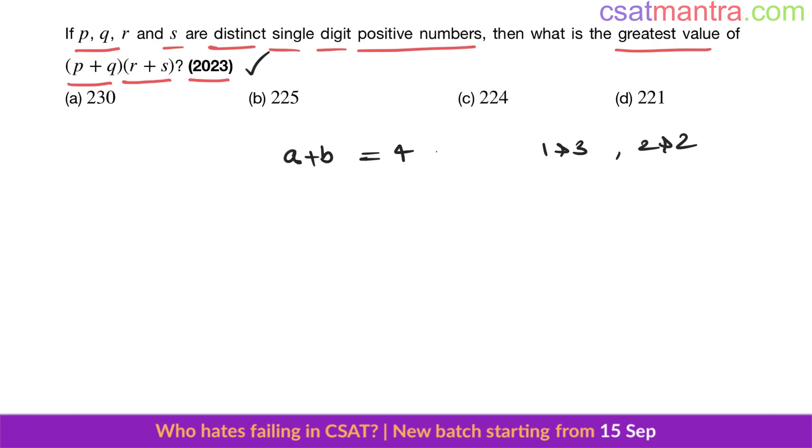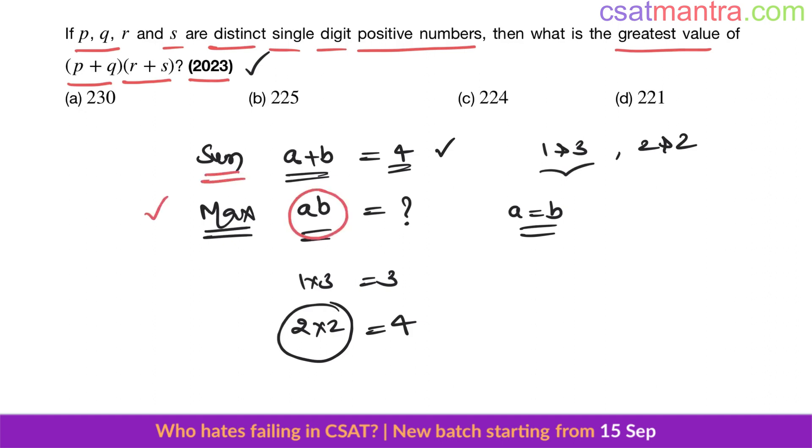I have been given this. I have been asked to find when this is maximum. Sum is given. When is this maximum? ab is maximum when a is equal to b. See this: one into three, you are getting three. Two into two, you are getting four. Product is maximum when a equals b. So sum is given, we are asked about product. When is this maximum? This is maximum when a equals b.